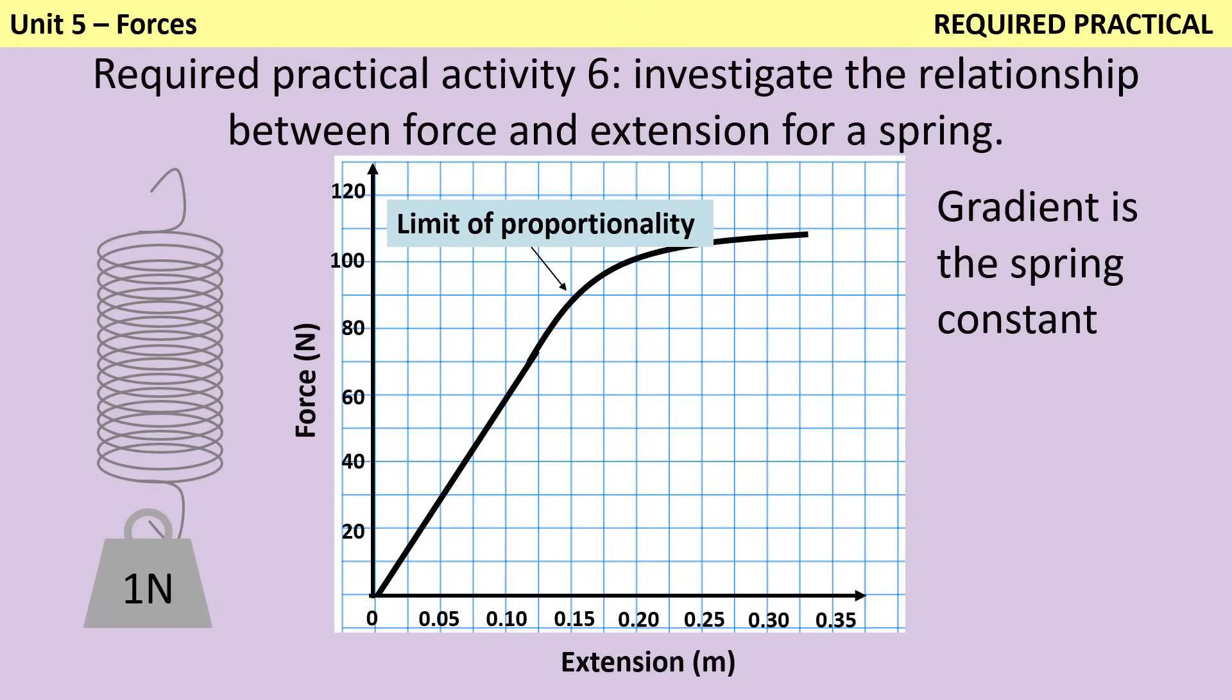So why have we flipped the axes in this graph? Well there are two reasons. One is that it is possible to do this practical the other way around. You could stretch the spring until it's a certain length and then see what force is required to get that extension, but the other reason is actually a mathematical one. If we reverse the axes from what you might expect to do and plot extension on the x-axis and force on the y-axis, then the gradient is the same value as the spring constant and that makes that calculation much easier to do.